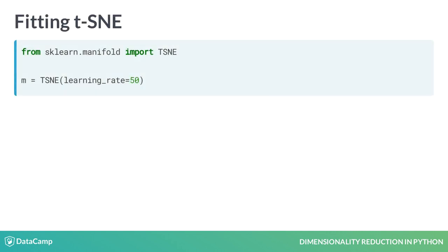We'll create a TSNE model with learning rate 50. While fitting to the dataset, TSNE will try different configurations and evaluate these with an internal cost function. High learning rates will cause the algorithm to be more adventurous in the configurations it tries out, while low learning rates will cause it to be more conservative. Usually, learning rates fall in the 10 to 1000 range.